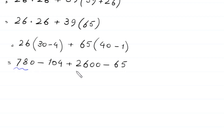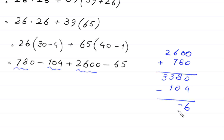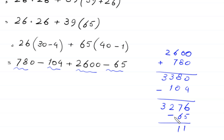Now we add 676 and 780, and subtract 104, giving 676 plus 2535, which totals 3211. So this is equal to 3211, and this is the final answer to this problem.